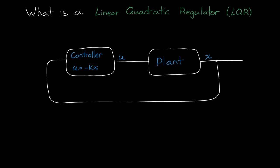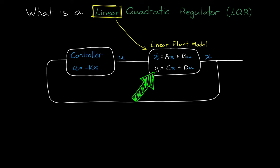The linear in LQR means that the plant that we're trying to control is modeled as a set of linear equations. In state space, this is the x dot equals Ax plus Bu, and y equals Cx plus Du. And we really only need to look at the A and B matrices.